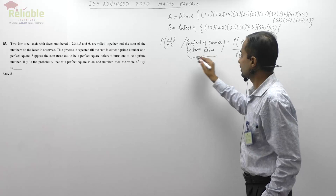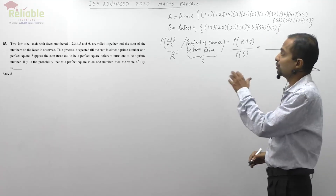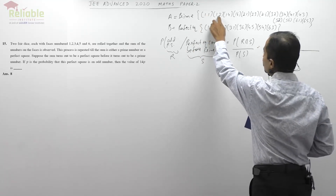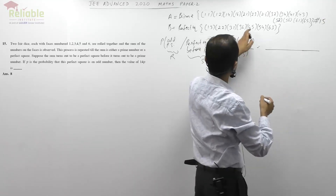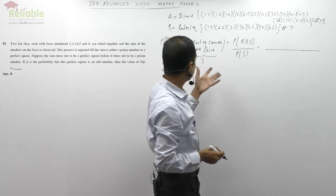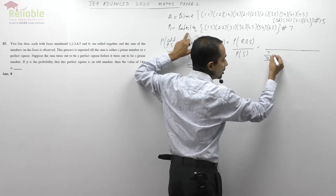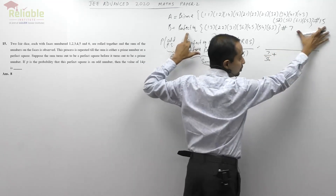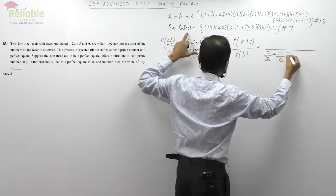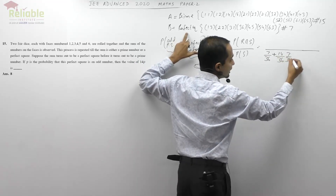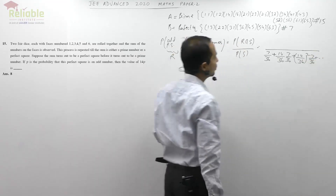Let's evaluate P(S). There are 15 ordered pairs for prime and 7 for perfect square. In the first roll, perfect square ends the game: probability 7/36. Neither occurs: (36-22)/36 = 14/36. Then in the second roll, perfect square comes: (14/36)×(7/36). And so on — it forms an infinite GP. P(S) = (7/36) / (1 - 14/36) = 7/22.